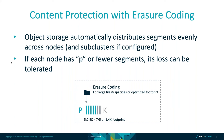The thing to bear in mind here is that — and we'll go into a deeper dive as to what K/M/P means — but if you have P parity segments, and you have P or fewer segments on any one of the nodes, then the loss of that node can be tolerated.